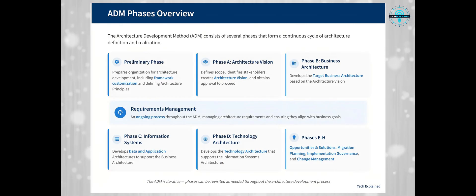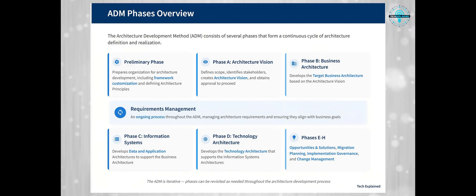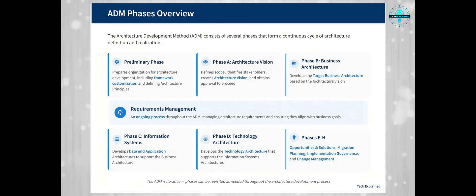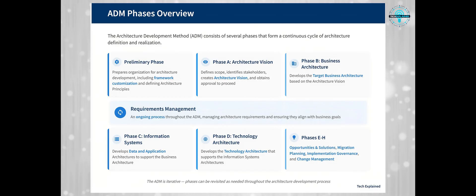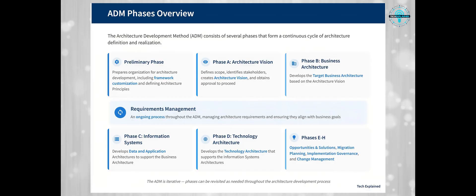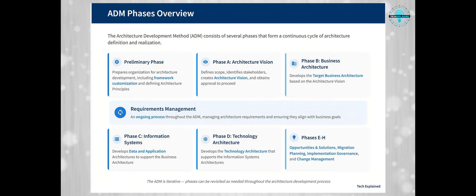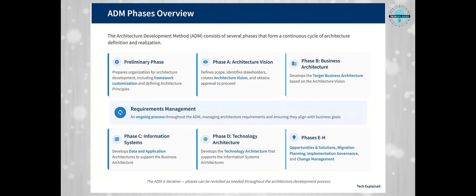The ADM consists of several phases that form this continuous cycle. Let me walk you through them briefly, and we'll dive deeper into each one in the coming slides. There's also requirements management, which isn't really a phase, but an ongoing process throughout the ADM — it's like the fuel that keeps the ADM running, managing architecture requirements as they evolve.